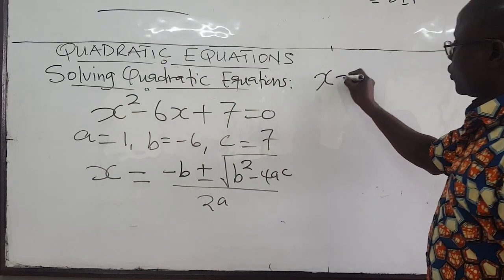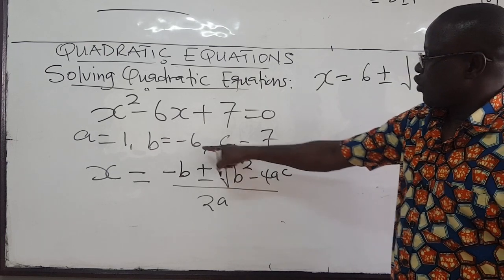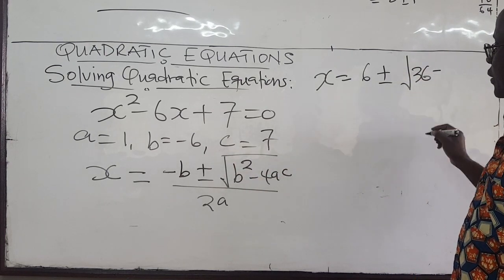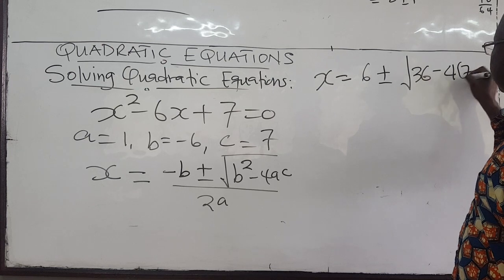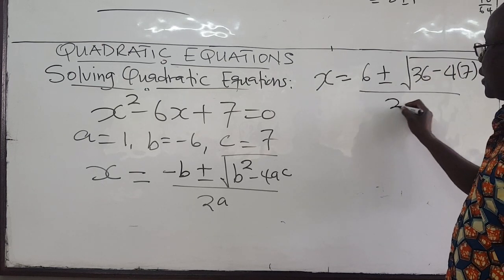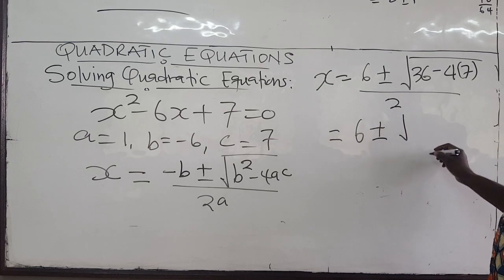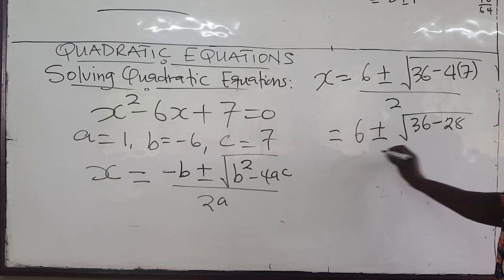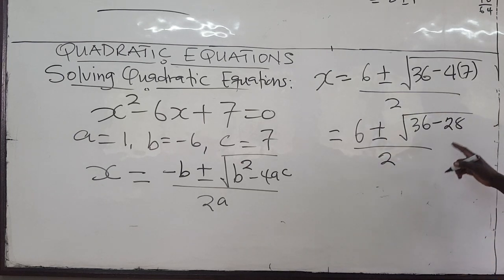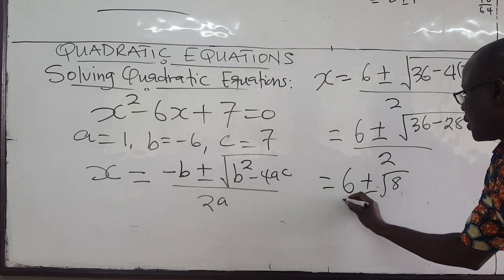Plugging in: x = 6 plus or minus the square root of b² = 6² = 36, minus 4 times a = 1 times c = 7, all over 2 times 1. This gives 6 plus or minus the square root of 36 minus 28, all over 2. And 36 minus 28 = 8, so this is 6 plus or minus the square root of 8, over 2.